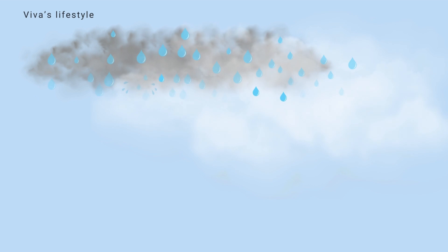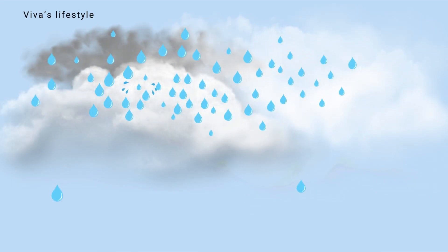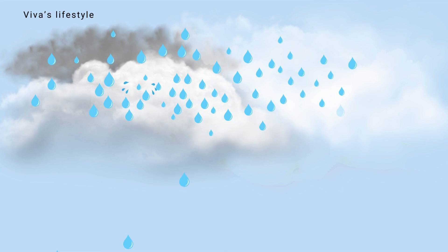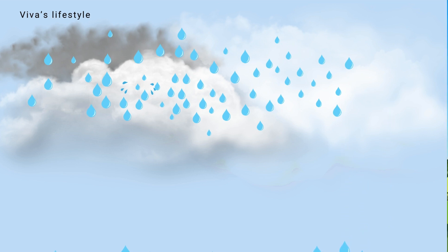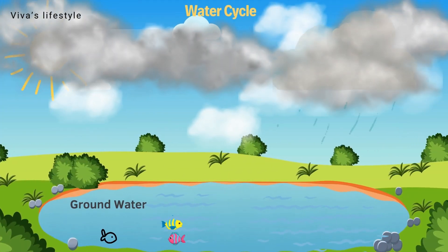As the tiny droplet formation continues, the droplets become heavy and start dropping toward the ground due to gravity. In the precipitation phase, the water droplets or ice crystals fall back to the Earth.